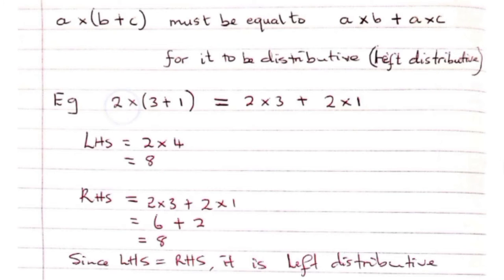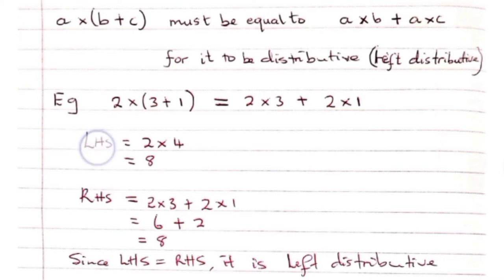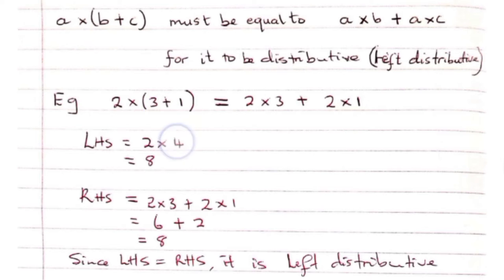For example, 2 times (3 plus 1) must equal 2 times 3 plus 2 times 1. Left-hand side: 2 times (3 plus 1) — adding first gives 2 times 4, which is 8.